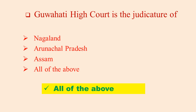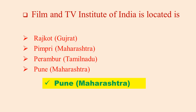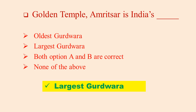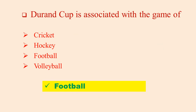Where did the Indian Army conduct the Ordnance Disposal Mission? Friction can be reduced by changing from sliding to rolling. The concept of a written Constitution was first born in the USA. When was the Citizenship Amendment Bill passed by the Parliament? 2019. Heavy Water Project Talcher and Fertilizer Plant Paradeep are famous industries of Odisha. Durand Cup is associated with the game of football.